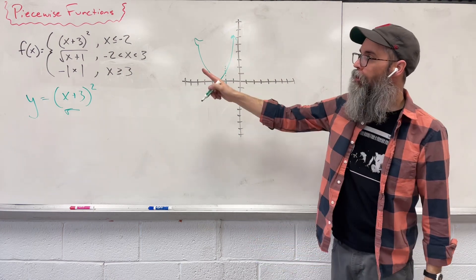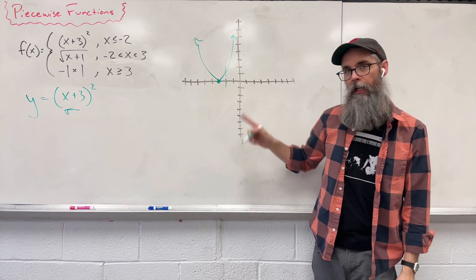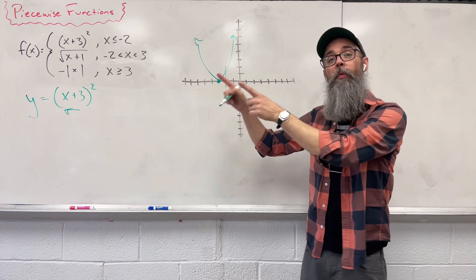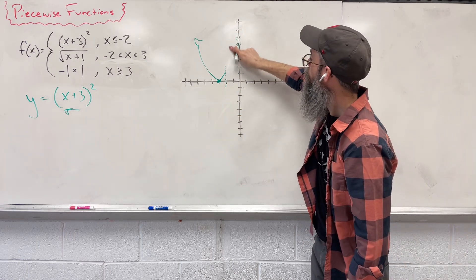Now, we keep the graph that is less than negative 2. What side is less than? Everything to the left. We keep that side. Everything on the right, goodbye.